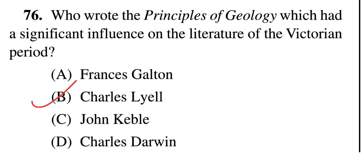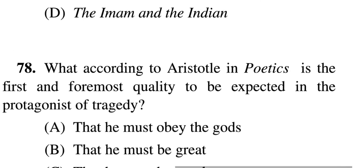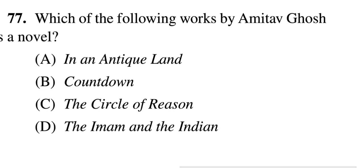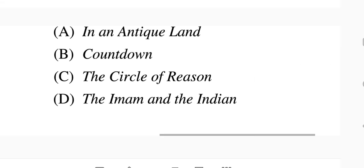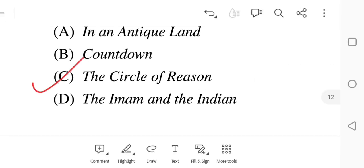Next question: Which of the following works by Amitav Ghosh is a novel? You must have read his famous work 'The Shadow Lines.' Options: A — In an Antique Land, B — Countdown, C — The Circle of Reason, D — The Imam and the Indian. The correct answer is C — The Circle of Reason, a novel written by him.